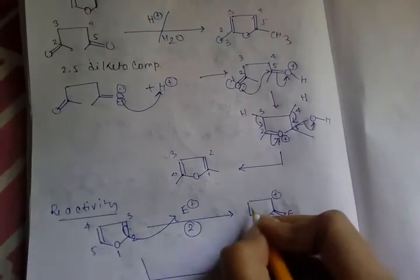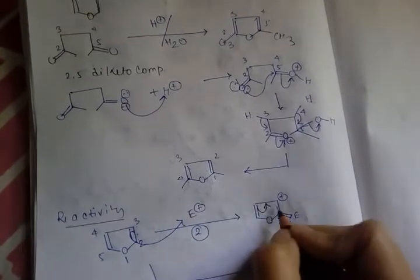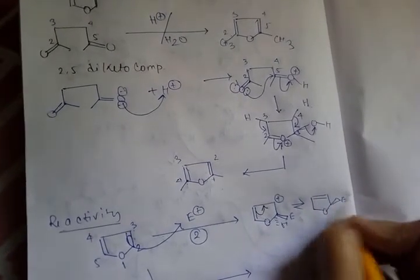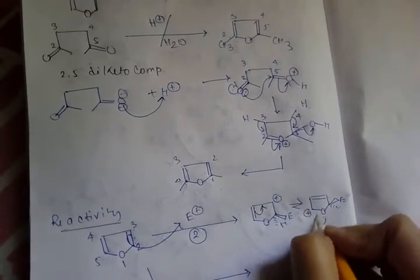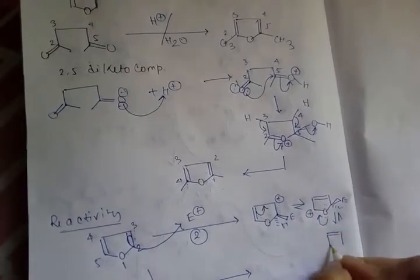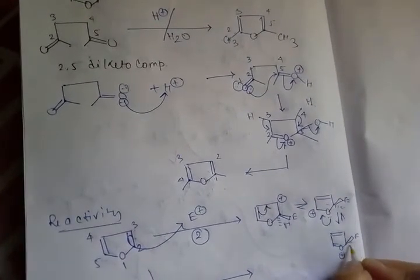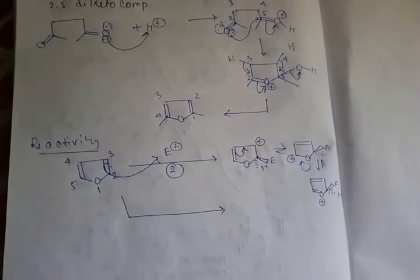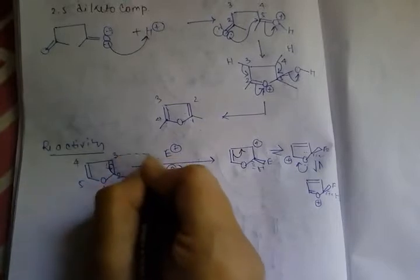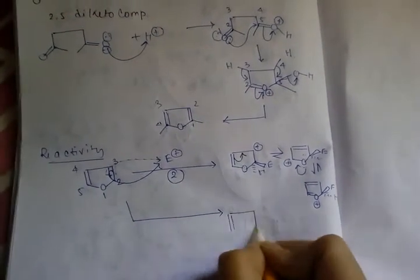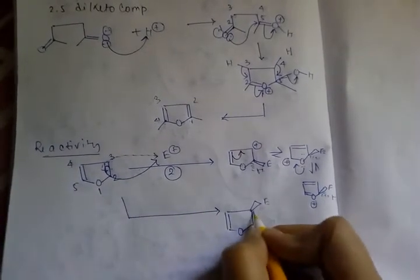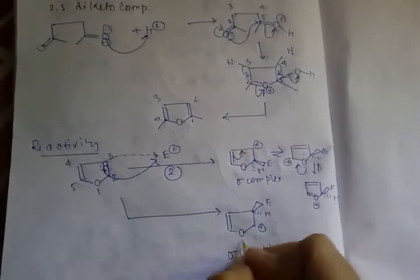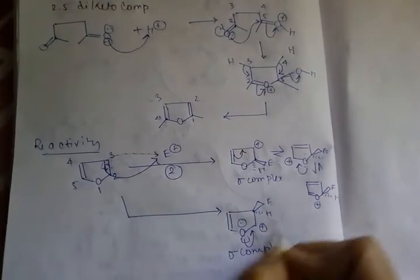If electrophilic substitution occurs via the two position, a positive charge is generated at the three position, which can be neutralized by bond rotation. A positive charge also generates that can be neutralized by the lone pair of oxygen. If substitution occurs via position three, the positive charge generates at position two and can only be stabilized by the lone pair of oxygen.